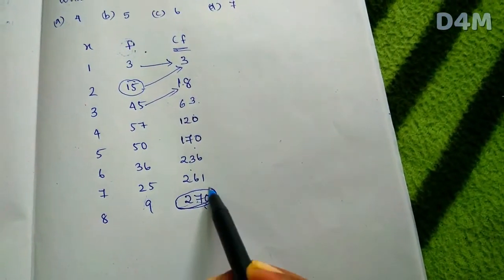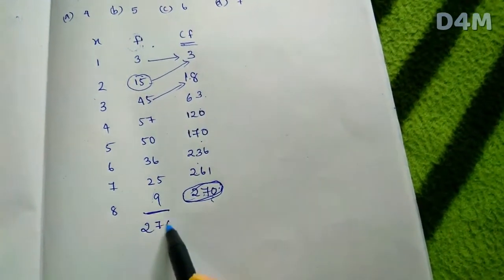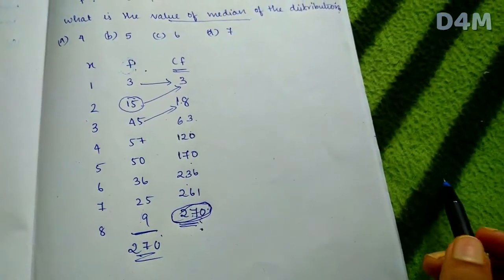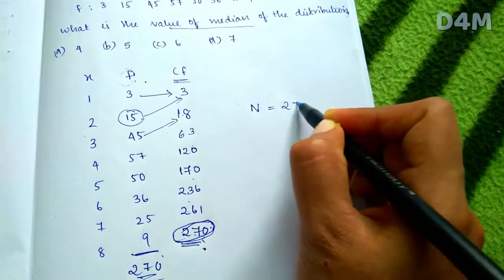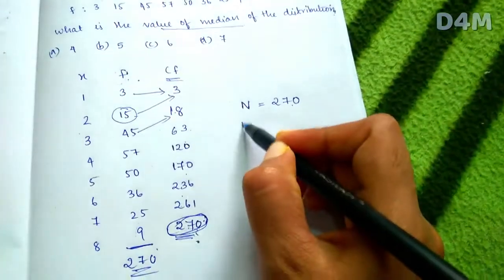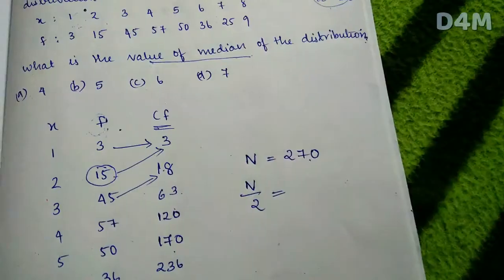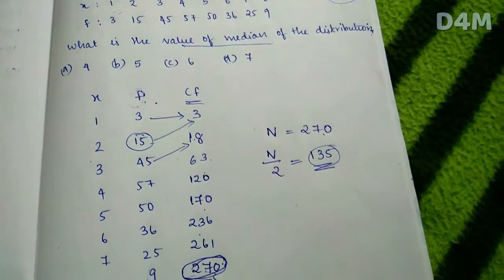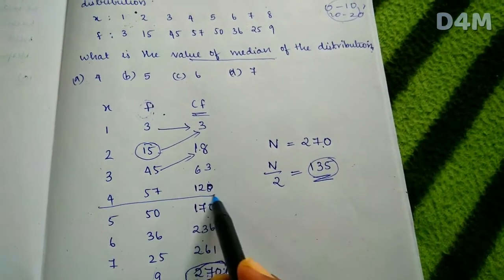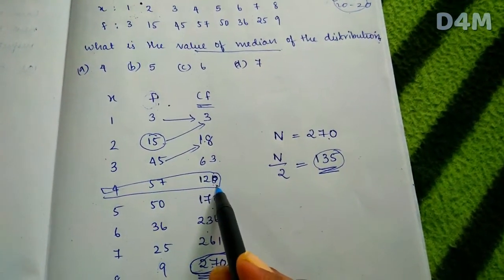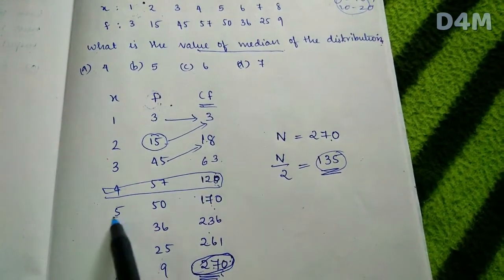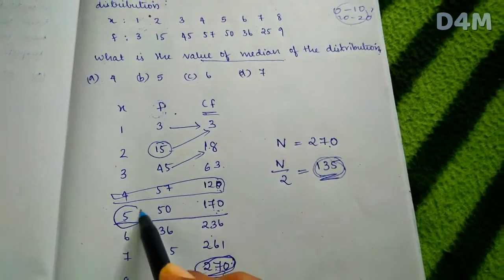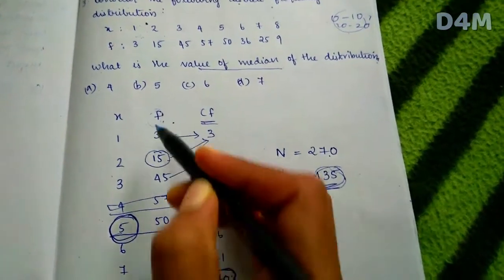The last cumulative frequency is the total frequency, which is 270. For the median, n equals 270, so n/2 equals 135. We look for the cumulative frequency just above 135; that is 120 in the previous class, making the median class 121 to 170. The x value is 5, which is the right answer.